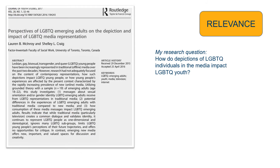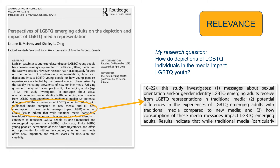Relevance may be one of the most obvious factors when evaluating your sources. When determining the relevance of a source, you want to ask yourself: how will this source help me answer my research question? Sources that provide background information, like Wikipedia articles, are a great place to start. However, you'll want to find additional sources that go beyond simple background information. Look for sources that discuss your specific research topic in-depth. Be sure not to just choose sources based on their titles or where they appeared in the list of database search results.